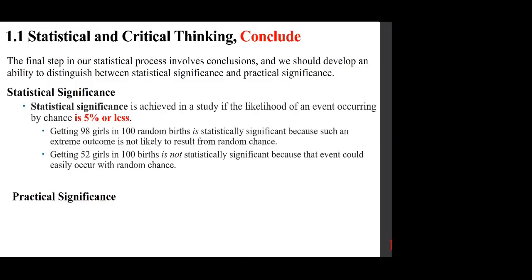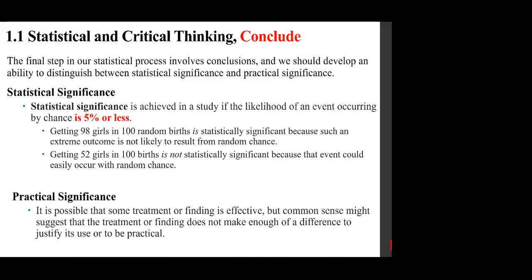Statistical significance is achieved in a study if the likelihood of an event occurring by chance is 5% or less. Getting 98 girls in 100 random births is statistically significant because such an extreme outcome is not likely to result from random chance. Getting 52 girls in 100 births is not statistically significant because that event could easily occur with random chance.